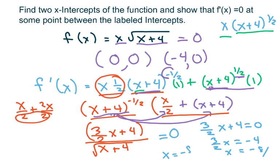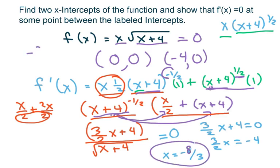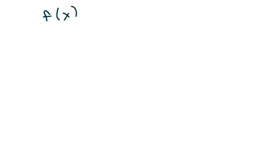So x equals negative eight-thirds, and negative eight-thirds is indeed in between zero and negative four. The next problem is very similar. We have f of x equals negative three x times the square root of x plus one.